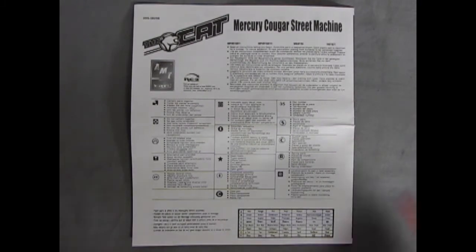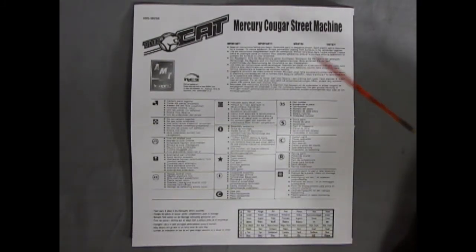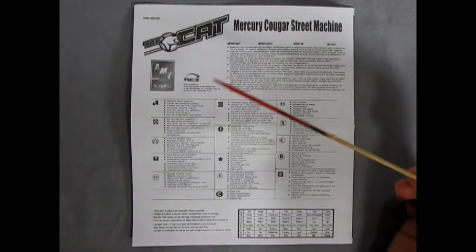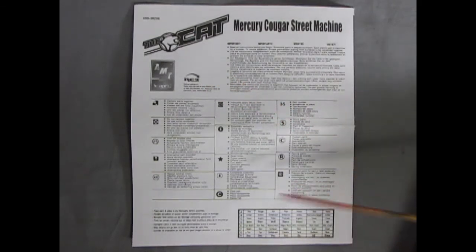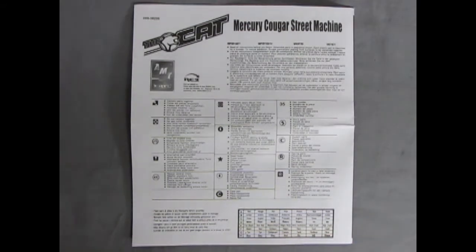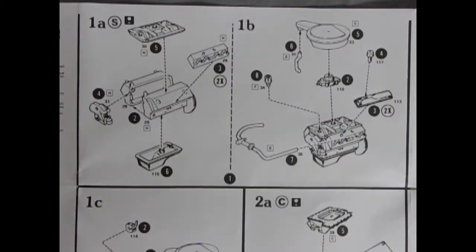Here we have the instruction sheet for our Mercury Cougar Street Machine. This one was by AMT Ertl under RC2, so it is from a little while ago. Here we have a paint chart down below to show all the colors that we need to build this kit. Now what makes this cat really cool is that you actually get two Ford engines in here. One is a standard 351 cubic inch and the other is the amazing 429 super motor.